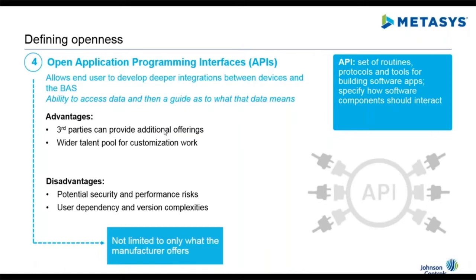An open API allows internal and external development teams a fast and consistent way to add features and solutions to a product, such as our building automation system. A manufacturer, when they develop a system as complex as a BAS, we focus on providing features that meet the majority of our customers' needs.